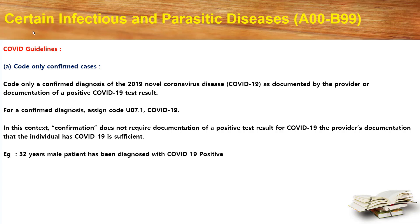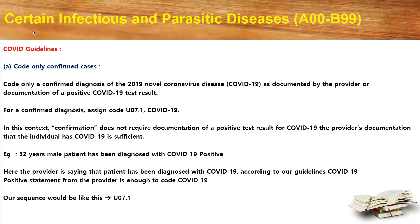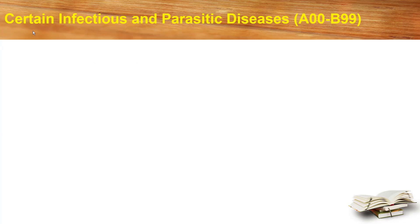Let's look at an example. A 32-year-old male patient has been diagnosed with COVID-19 positive. Here the provider is saying that the patient has been diagnosed with COVID-19. According to our coding guidelines, a COVID-19 positive statement from the provider is enough to code COVID-19. Hence our sequence would be U07.1. U07.1 means COVID-19.